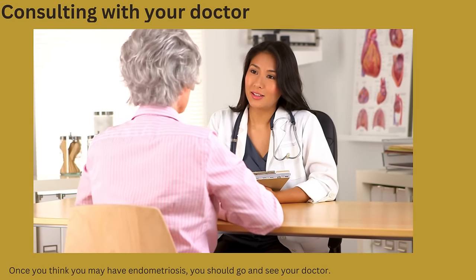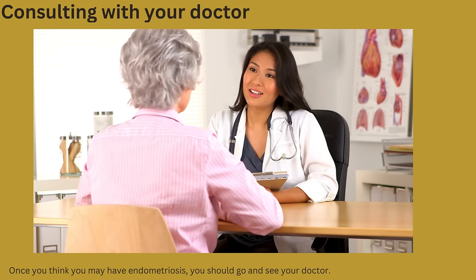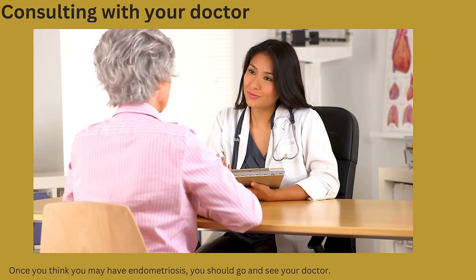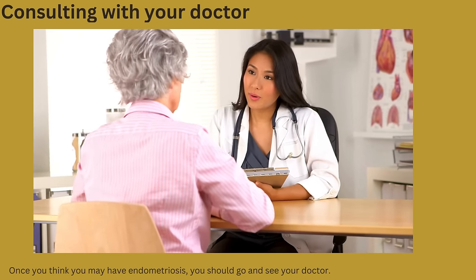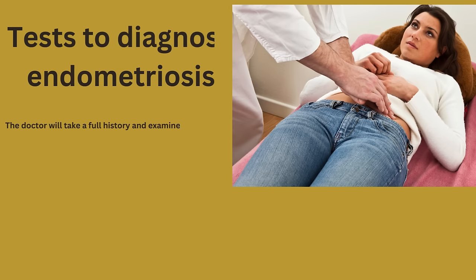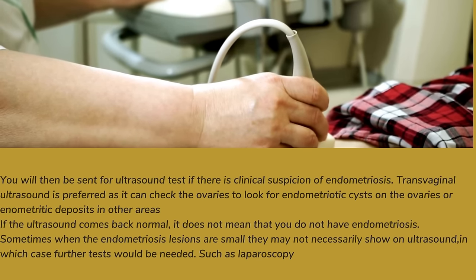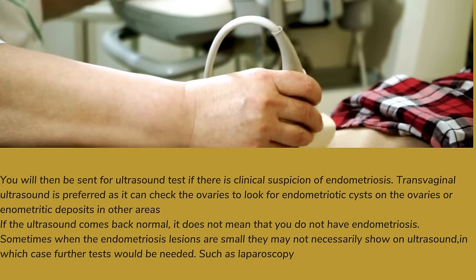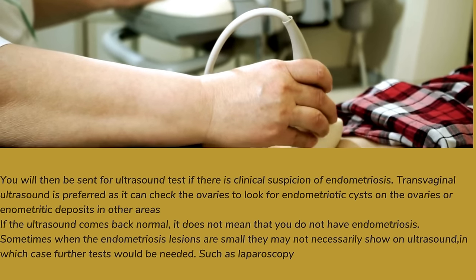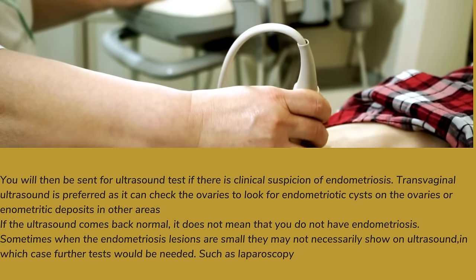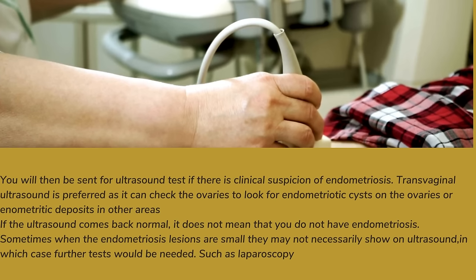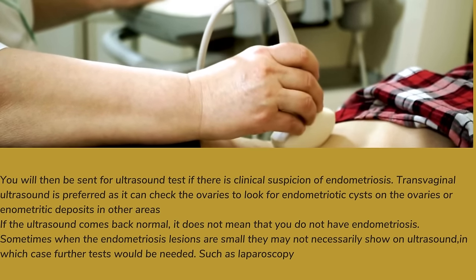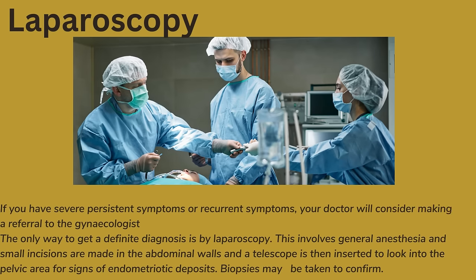Once you think you may have endometriosis, you should go and see your doctor. We have a video on this channel about the symptoms of endometriosis if you are not sure. To diagnose endometriosis, the doctor will take a full history and examine the abdomen. You will then be sent for an ultrasound test. If there is clear suspicion of endometriosis, transvaginal ultrasound is preferred as it can check the ovaries for endometriotic cysts or deposits. If the ultrasound comes back normal, it doesn't mean you do not have endometriosis — sometimes small lesions may not show on ultrasound, and further tests will be needed, such as laparoscopy.